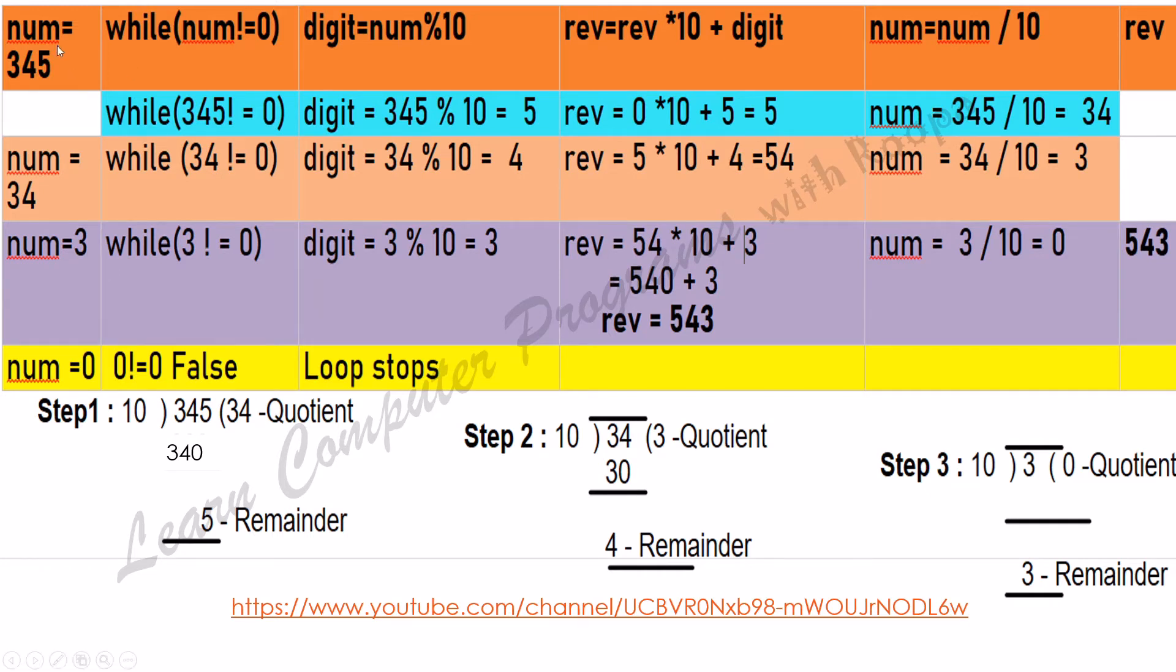Now we have to extract this digit 4. For that, we are again going to take this number 345 and do an integer division by 10. When we do the integer division, we take this quotient, which is 34. This 34 is what I have written here. So the value of num has become 34.